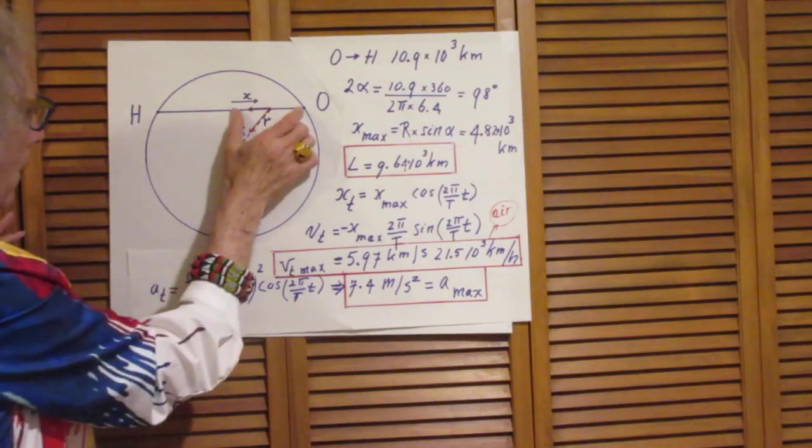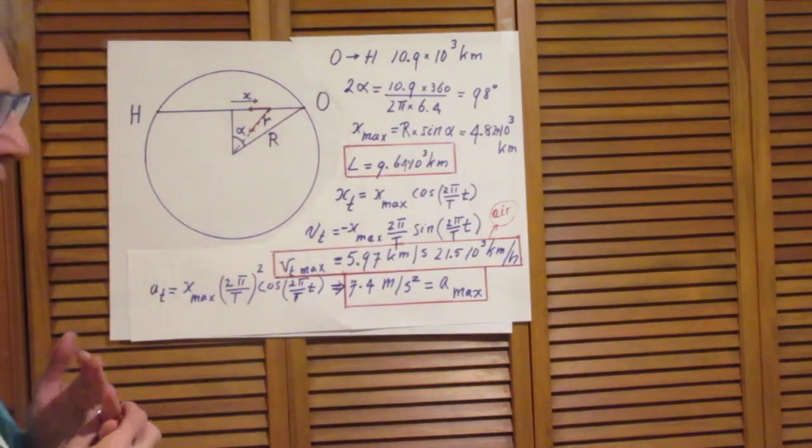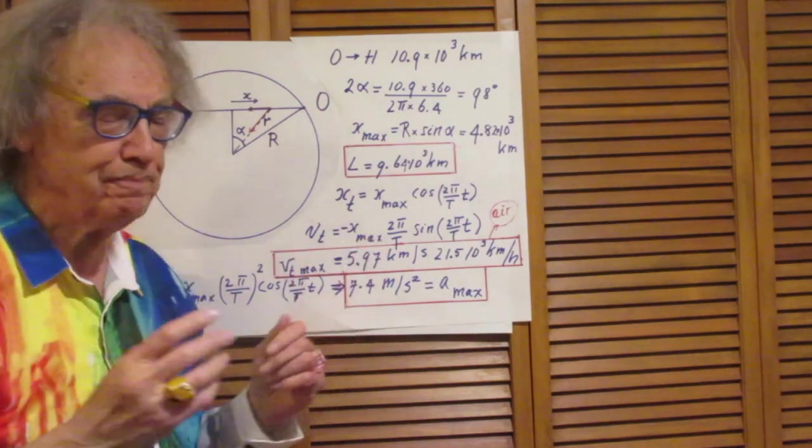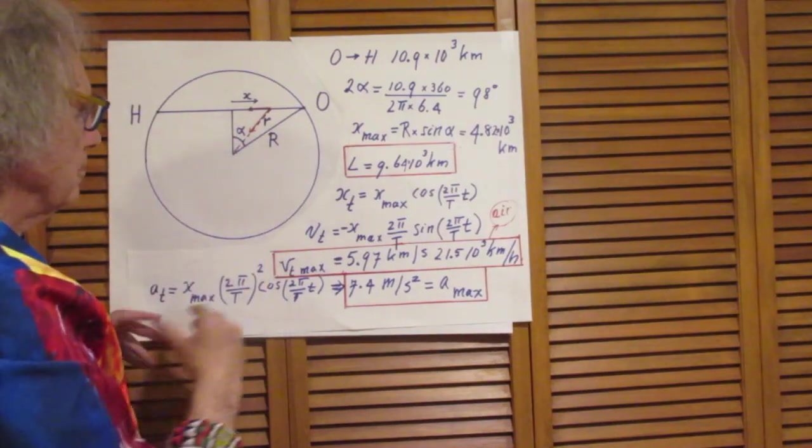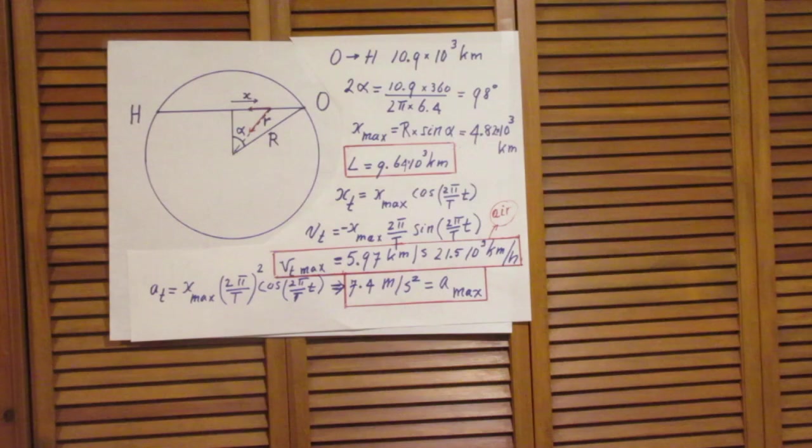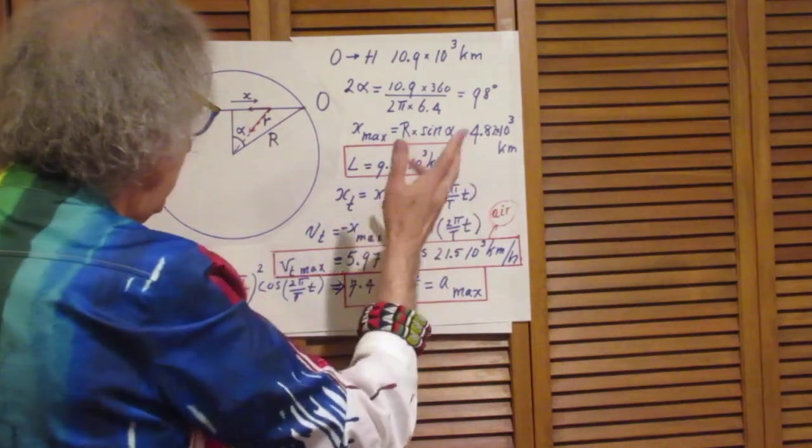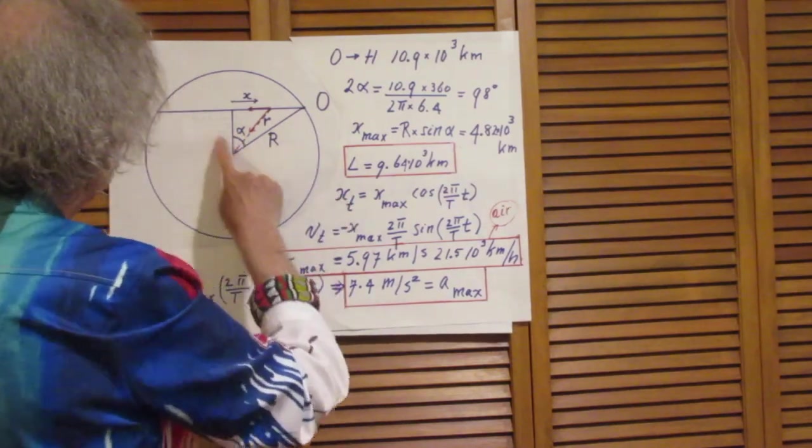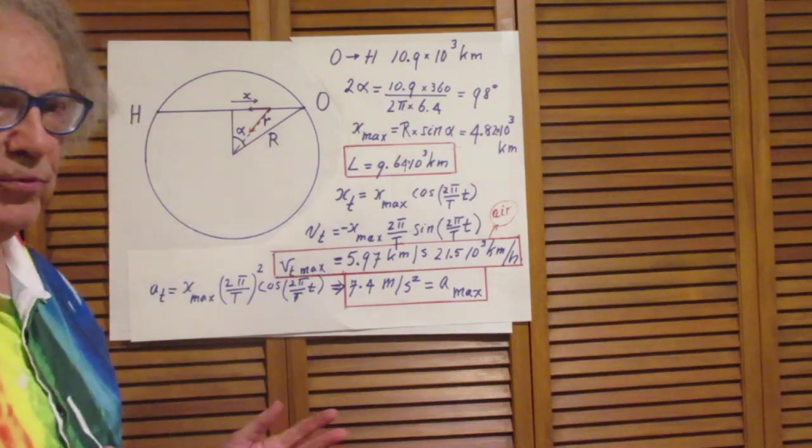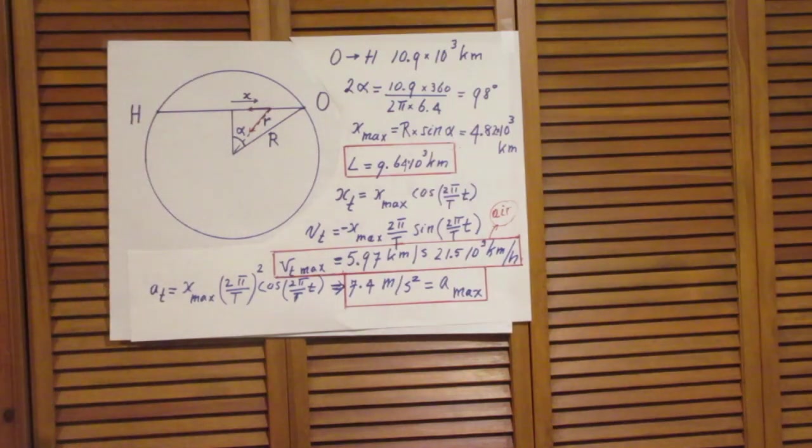So this angle alpha is about 49 degrees. Therefore, the distance from x equals 0 to Oslo, which is the maximum value of x possible, is the radius of the earth times the sine of angle alpha, and that is 4.8 thousand kilometers. So the length of the tunnel is twice that, about 9.6 thousand kilometers. Keep in mind the diameter of the earth is about 13,000 kilometers, so 9.6 is a sizable fraction.